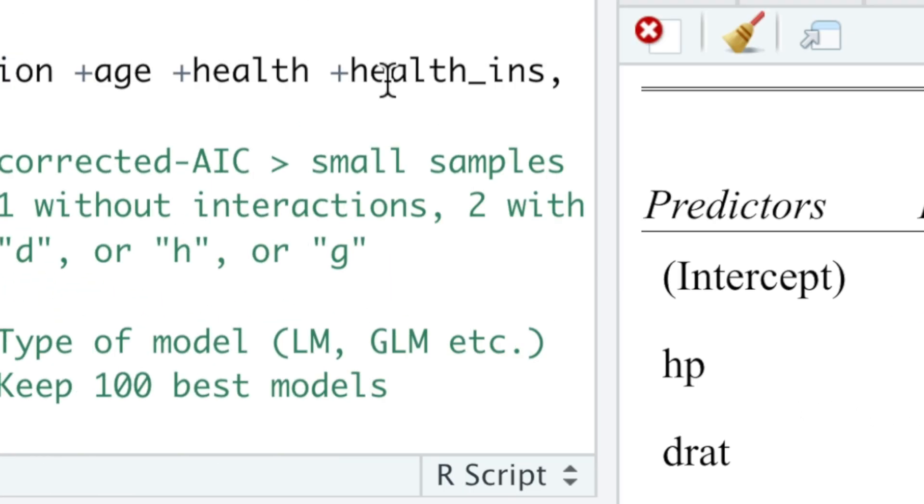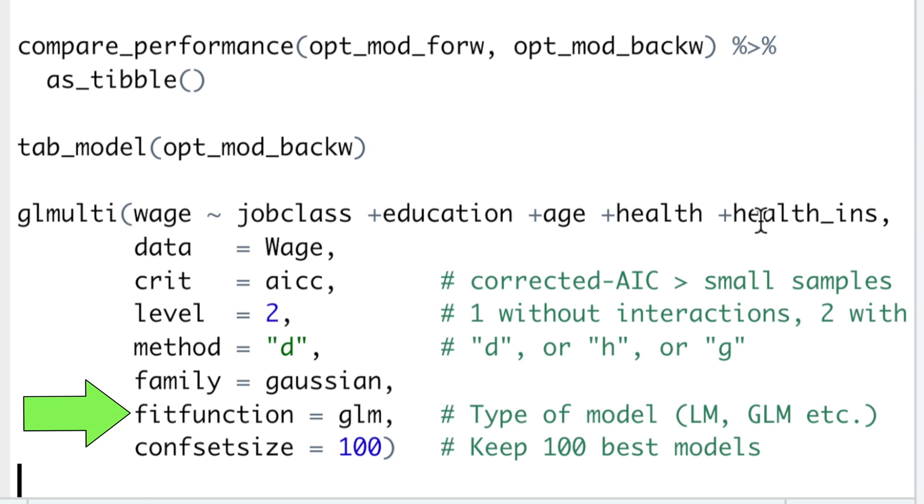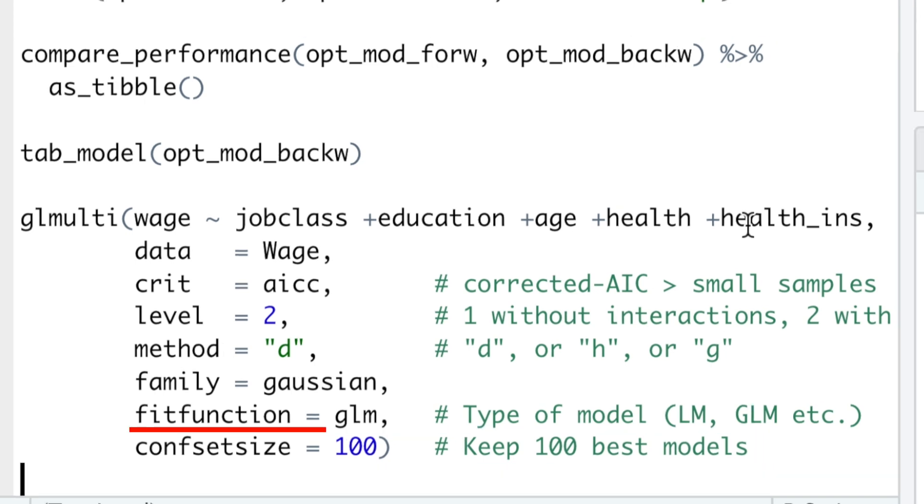You then specify the distribution family, and the fit function, where any function similar to lm or glm can be used. Lastly, conf set size argument allows you to keep a particular number of the best models, so-called confidence set of best models. 100 is a default value here.